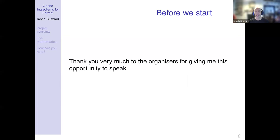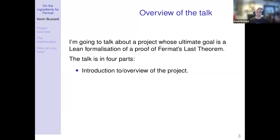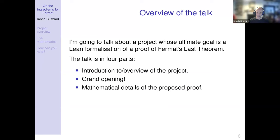I'm going to speak about a project whose ultimate goal is a Lean formalization of a proof of Fermat's Last Theorem. The talk is in four parts: first, a slightly waffly overview of the project; then we're going to open the project, because I promised people I would open it in April and today is the last day of April; then I'll give some mathematical details of the proof we'll be formalizing; and finally I'll say something about how to get involved.